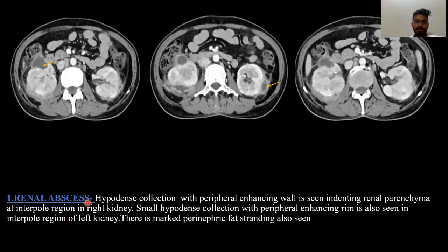First case: Renal abscess. There is a hypodense collection with a peripheral enhancing wall indenting the renal parenchyma at the interpolar region of the right kidney. There is another small hypodense collection with a peripheral enhancing rim in the interpolar region of the left kidney. Marked perinephric fat stranding is also seen.